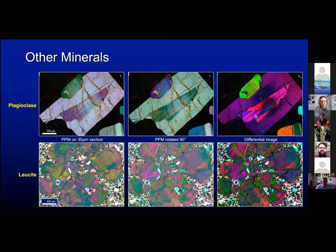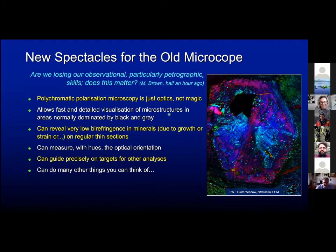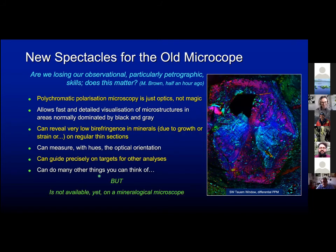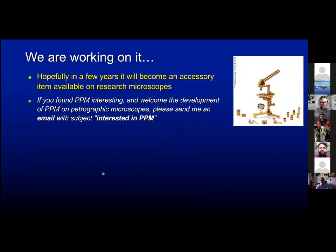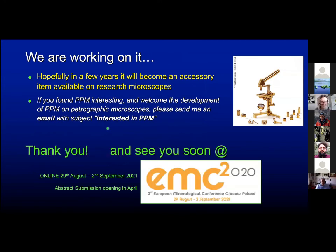You can also do something with plagioclase and leucite. The conclusions are that polychromatic polarization microscopy — which is not magic but optics — allows detailed visualization of microstructures and can reveal low birefringence in minerals due to growth, strain, or other causes, and can do many other things we just need to think about. Unfortunately PPM is not yet available on mineralogical microscopes, and I hope that in a couple of years it will be. If you found this interesting, please send me an email. I thank you and see you at EMC 2021.